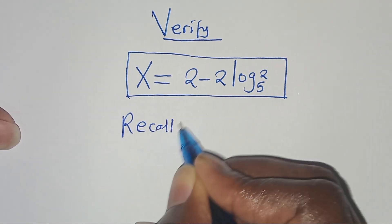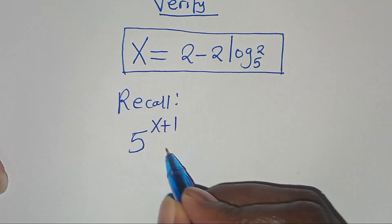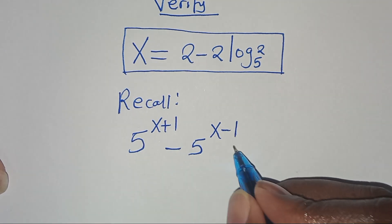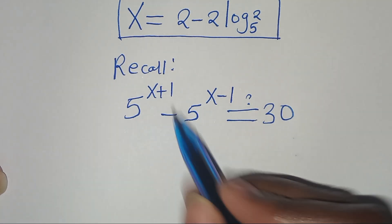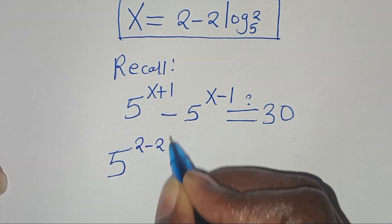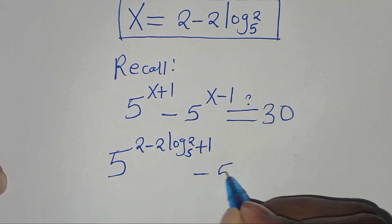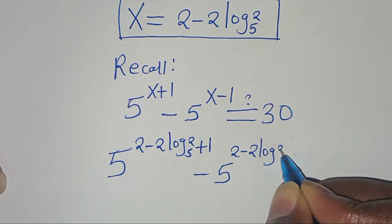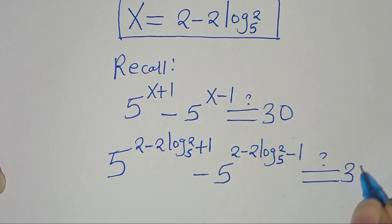If you recall, we have that 5 to the power of x plus 1, then subtract 5 to the power of x minus 1, is supposed to give us a value of 30. Now let's substitute the value of x, so that we have 5 to the power of (2 minus 2 log 2 to base 5) plus 1, then subtract 5 to the power of (2 minus 2 log 2 to base 5) minus 1. This is supposed to give us a value of 30.